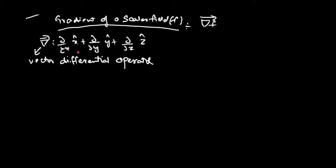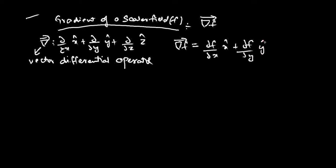Del bar performs the operation ∂/∂x x̂ plus ∂/∂y ŷ plus ∂/∂z ẑ — nothing more than that. So what will be the expression for del F? Del F will be equal to ∂f/∂x x̂ plus ∂f/∂y ŷ plus ∂f/∂z ẑ.